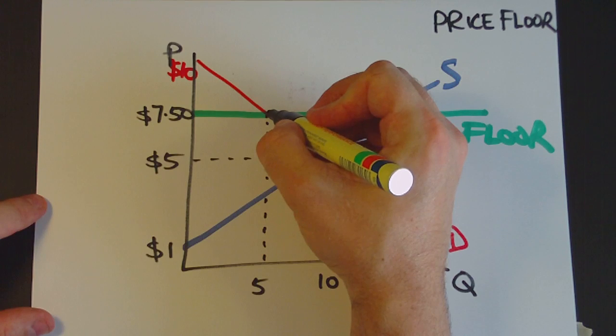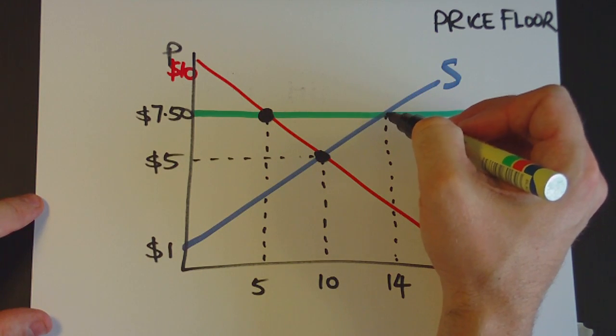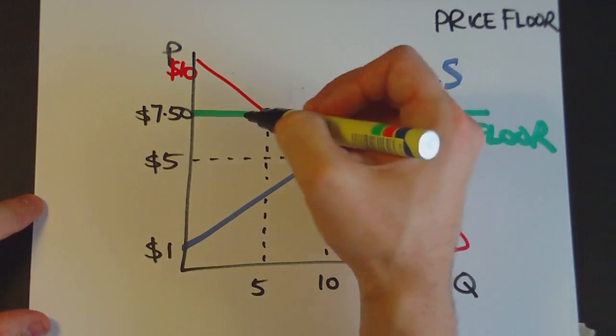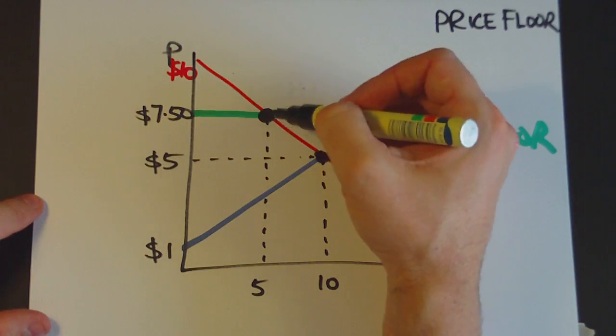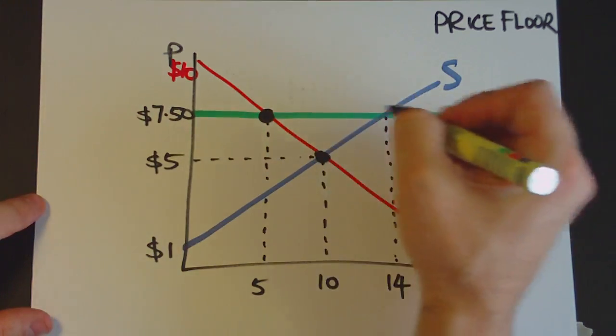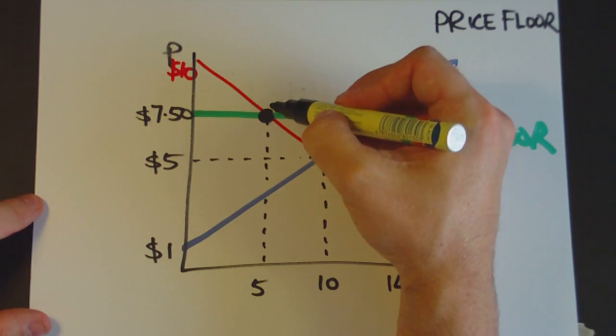The place that it's actually going to transact at is here, because even though suppliers are willing to supply a quantity of $14 at a price of $7.50, buyers are actually only interested in, and they only demand, five units. And so it doesn't really matter that they're willing to supply $14. Buyers actually purchase only five units.